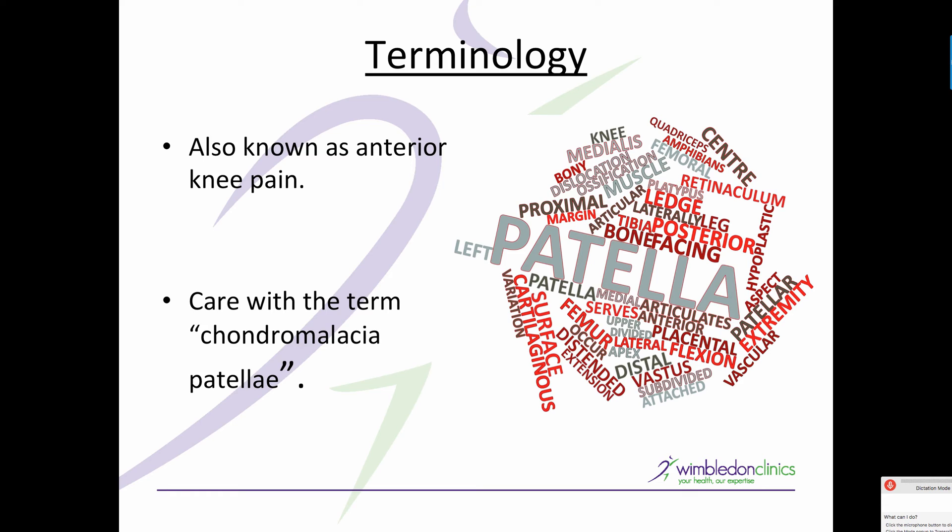People also talk about chondromalacia patella, and I want to clear up some issues around that. Strictly speaking, it is a descriptive term that describes the state of the retropatellar cartilage, and it can be graded from one to four depending on the severity of fibrillation, fissuring, etc. Because it's a descriptive term, it can therefore only be accurately used following an MRI or an arthroscopy.